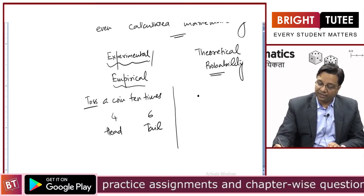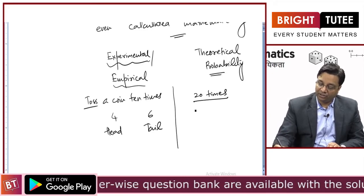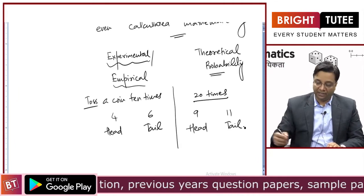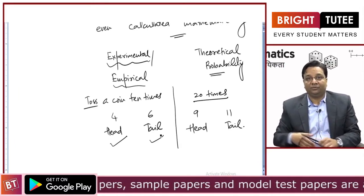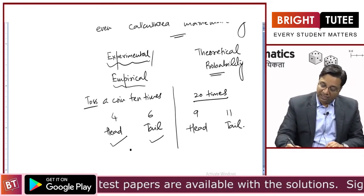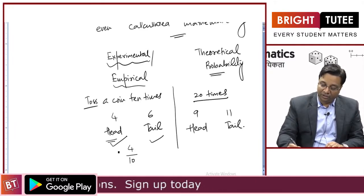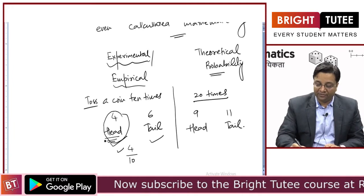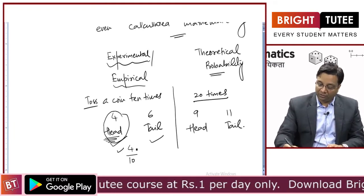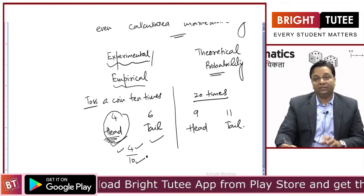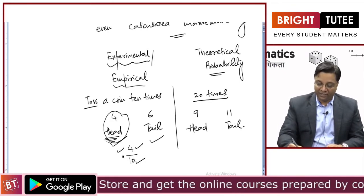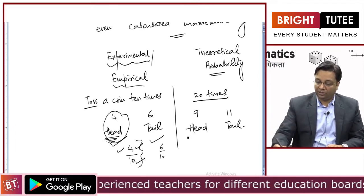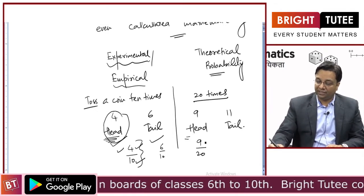Another student tosses the coin 20 times — it showed head 9 times and tail 11 times. The first student will think: out of 10 times, 4 times I got head, so chances of head are 4 divided by 10. We say 4 out of 10 are the chances head will come on top, and 6 out of 10 are the chances tail will come on top. The second student will say 9 out of 20. So these two answers for the chances of head are different.